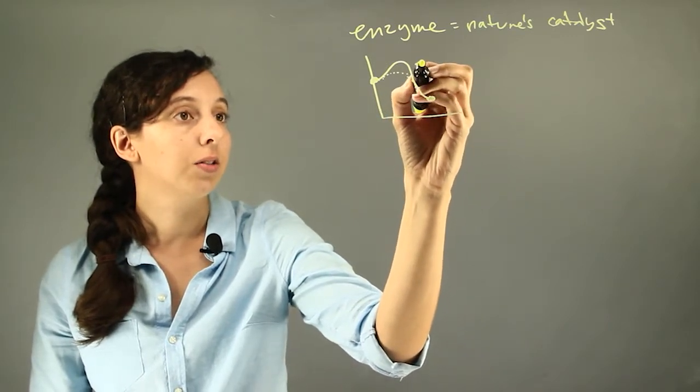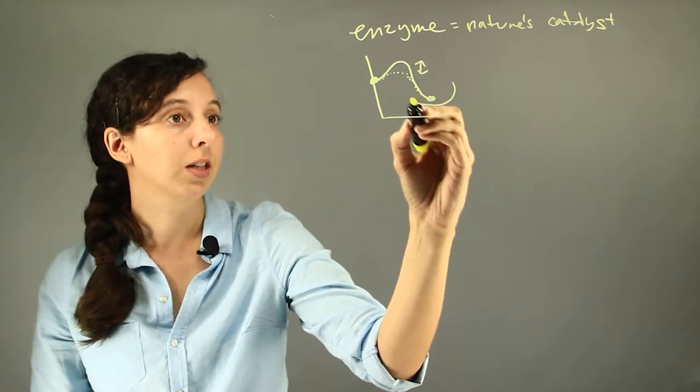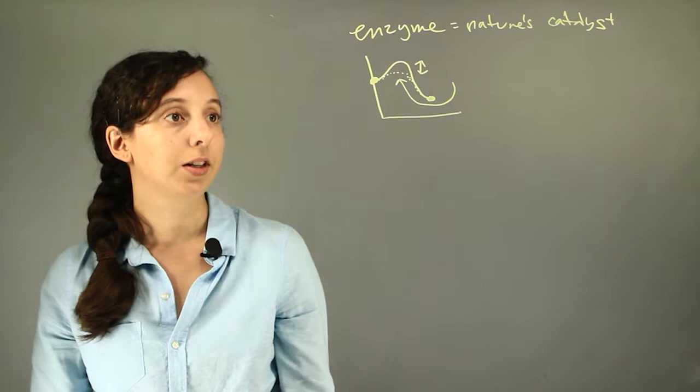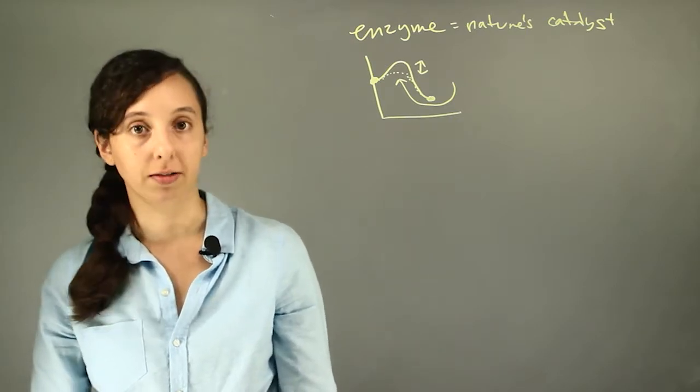That lowers the activation energy enough. This is what the enzyme does, it creates a new pathway so that this hump isn't as high, and then you have a faster reaction, and so you're able to continue life as you know it.